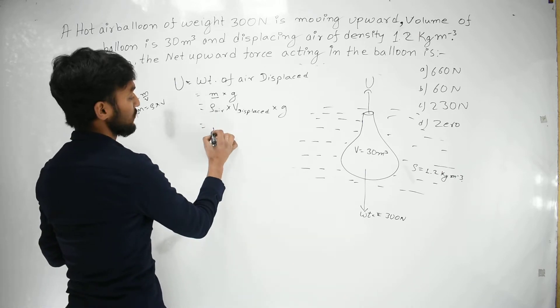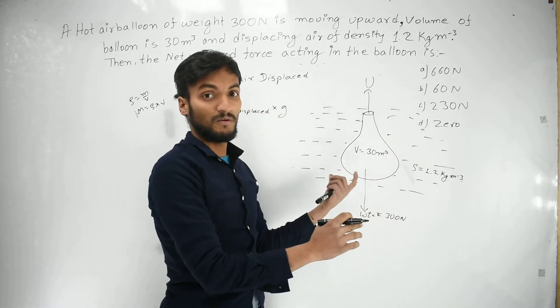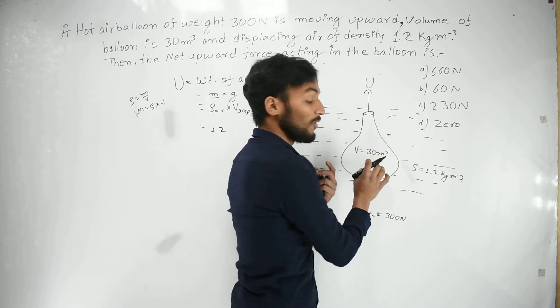Air density is 1.2, volume of the air displaced is 30 cubic meters.